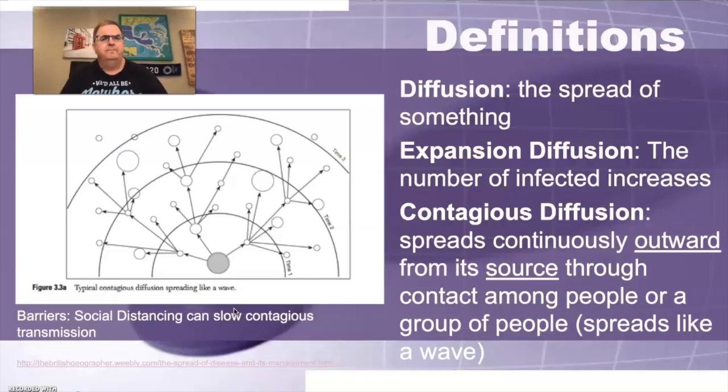So what is diffusion? Diffusion is just the spread of anything, of something. It goes from one place to another. There's a variety of types of diffusion. The first one, and really the major one that we're going to focus on in this discussion, is expansion diffusion. And what this is, is that the number of infected increases. It expands, if you will.